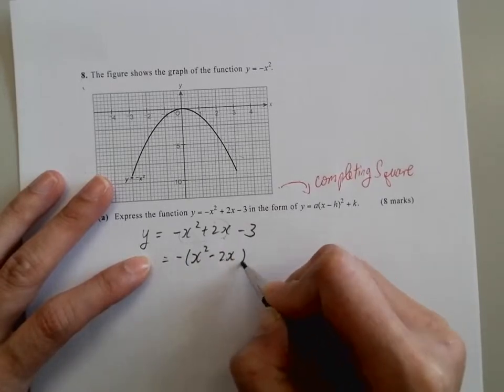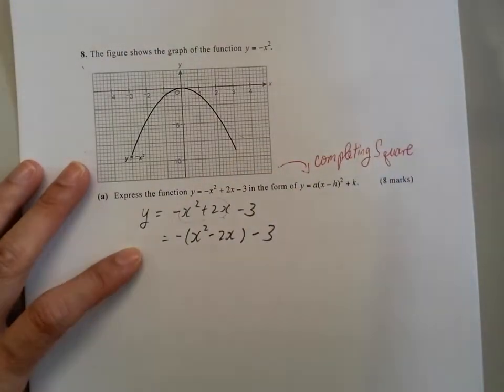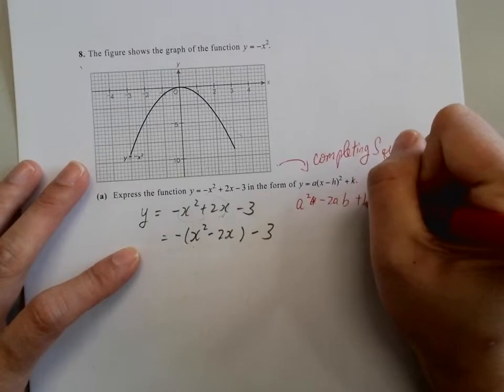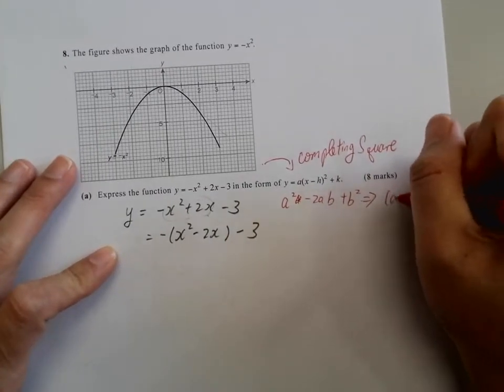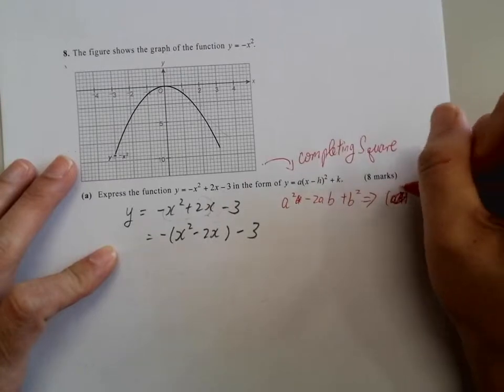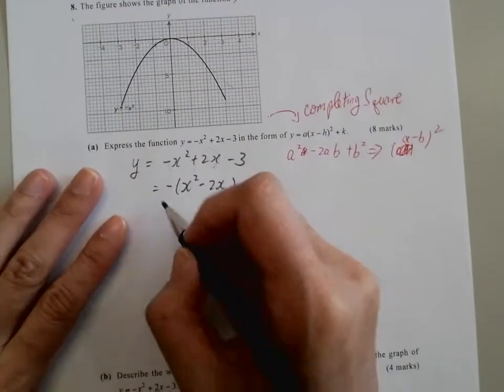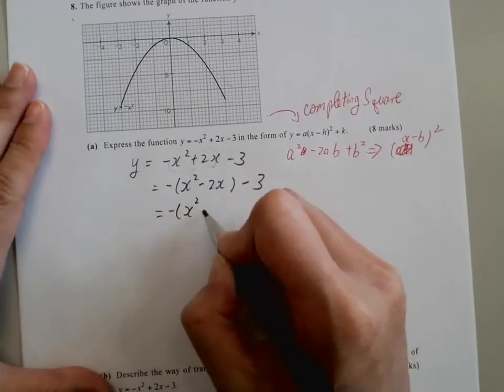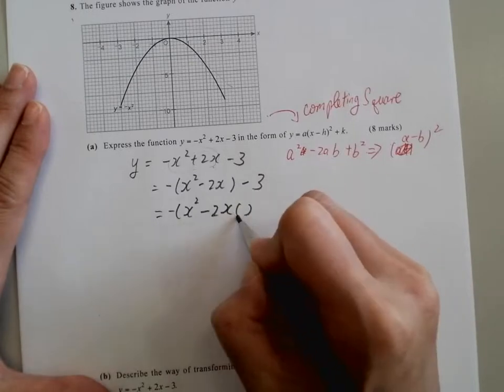Now we're going to think of something that looks like a squared minus 2ab plus b squared, so that we can have it equals to a minus b all squared. To do that, we're going to add something and minus something. We have 2ab, so b should be 1 to balance the negative 2.